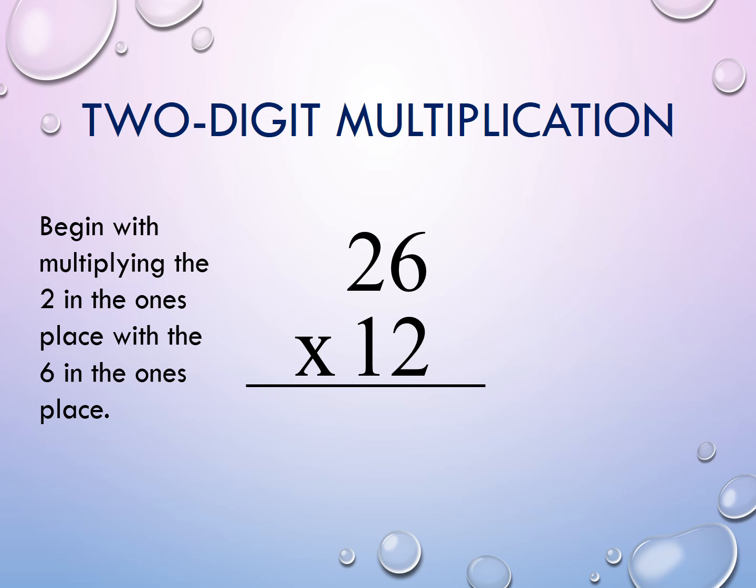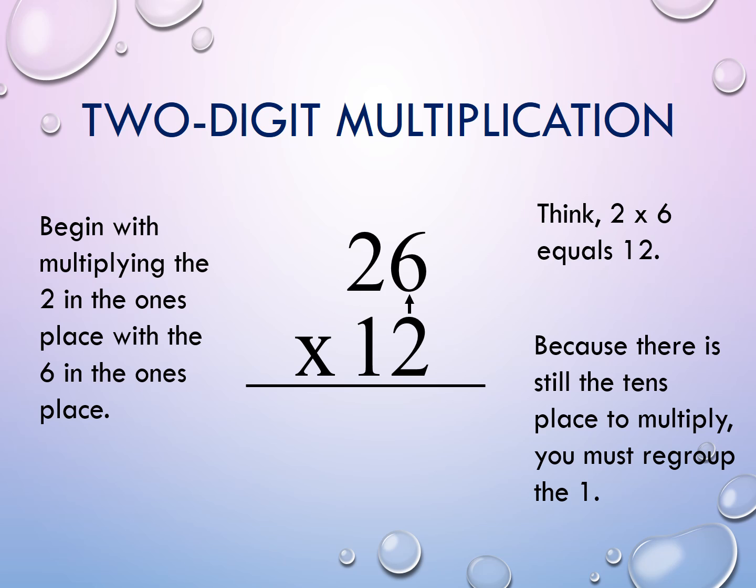Begin with multiplying the 2 in the 1's place with the 6 in the 1's place. Think, 2 times 6 equals 12. Because there is still the 10's place to multiply, you must regroup the 1.